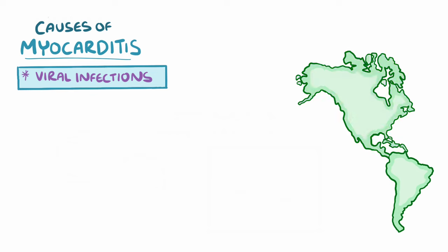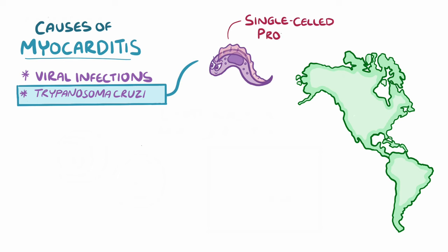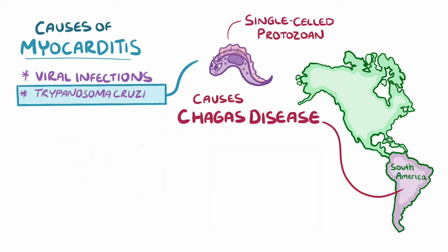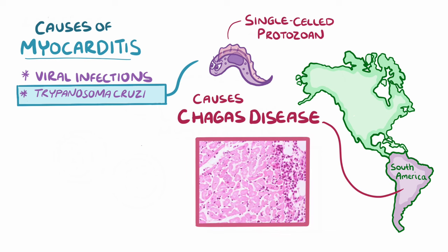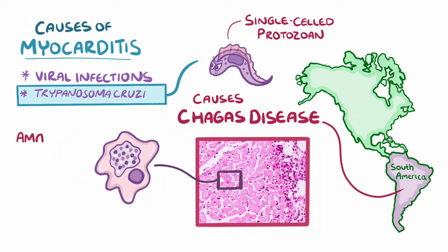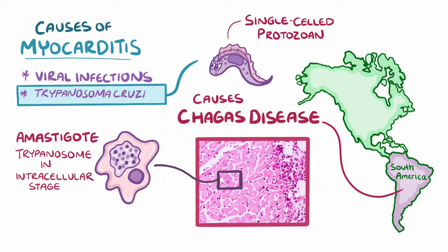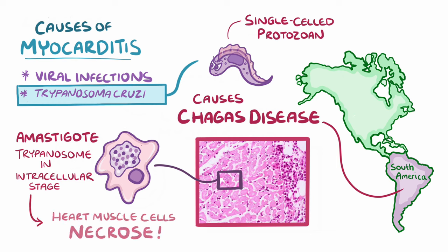There are plenty of other infectious causes as well. One of these is Trypanosoma cruzi, a single-celled protozoan that causes Chagas disease throughout South America. In Chagas disease, under a microscope, it's possible to see groups of amastigotes within the heart muscle cells, which are trypanosomes in the intracellular stage. As a result, the heart muscle cells necrose or die.